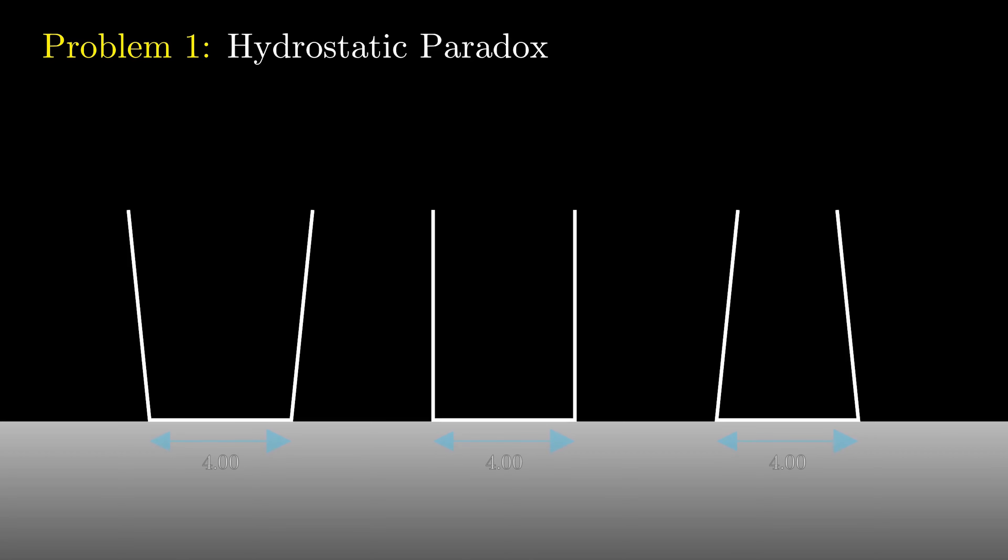Each of these containers have the same base area at the bottom, but as we go up, the one on the left has an increasing cross-sectional area, the one in the middle has a constant cross-sectional area, and the one on the right has a decreasing cross-sectional area.